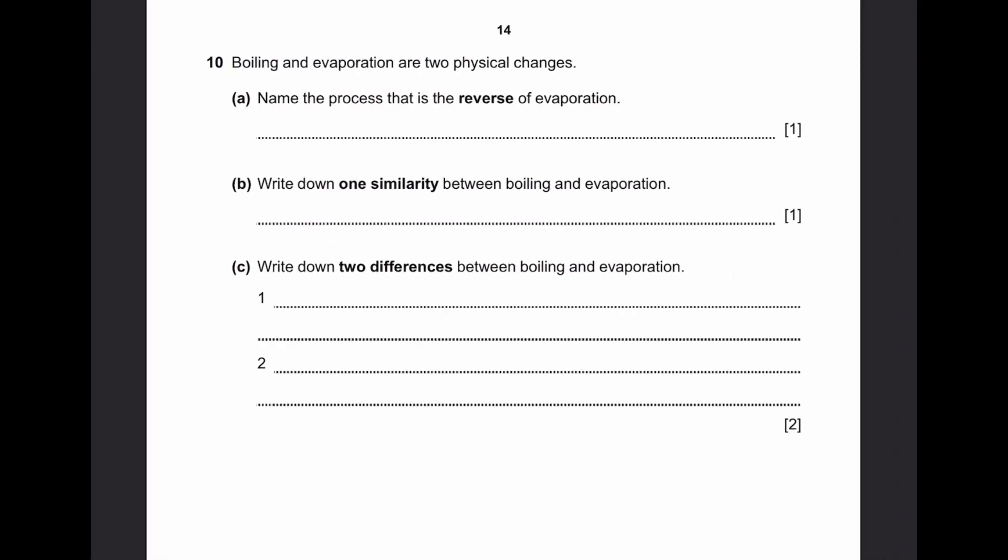Let's go to question 10. Boiling and evaporation are two physical changes. Part A. Name the process that is the reverse of evaporation. The reverse of evaporation is simply condensation. If evaporation is changing of a liquid into a gas, condensation is the other way around, gas to liquid. Part B. Write down one similarity between boiling and evaporation. This is quite obvious. Boiling and evaporation both involve changing a liquid into a gas.